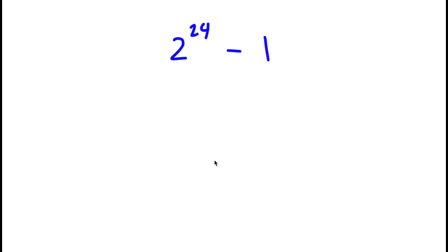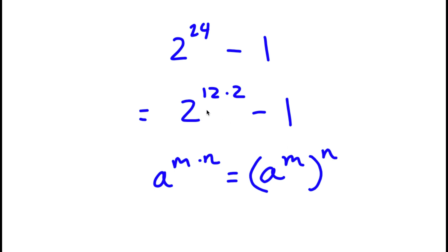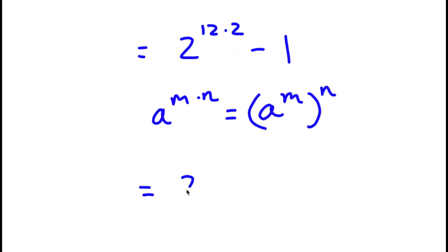Welcome back to Click Academics. In today's video I'm going to be teaching you how to solve this exponential problem — make sure to stick around to the end where I have three bonus problems. So I have 2 to the power of 24 minus 1. Now, 2 to the power of 24 is the same thing as 2 to the power of (12 times 2). And since a to the power of (m times n) equals a to the power of m, to the power of n, this is the same as (2 to the power of 12) to the power of 2, minus 1.